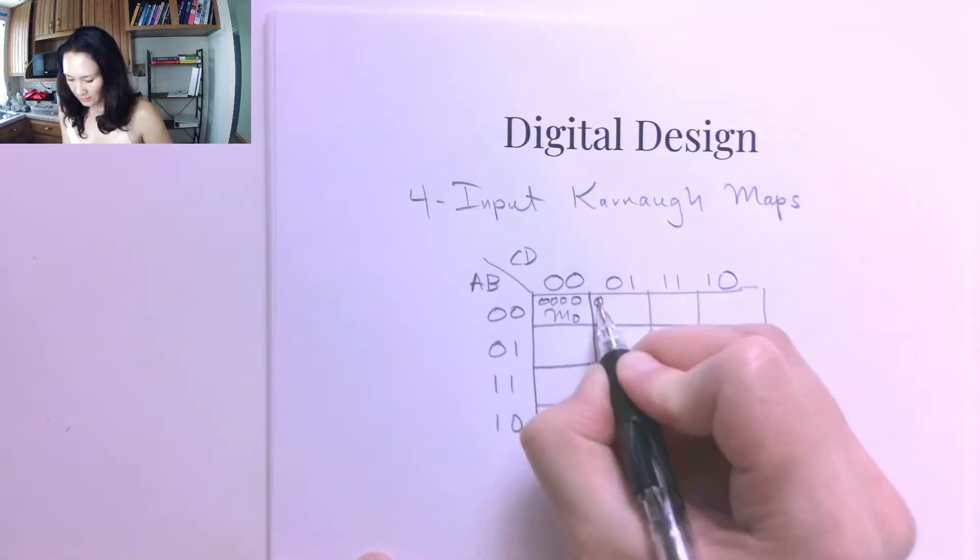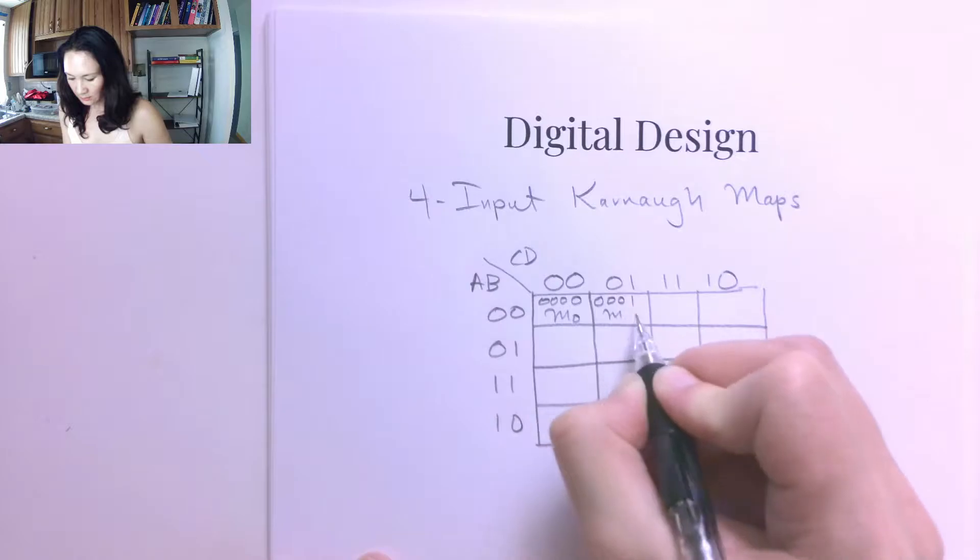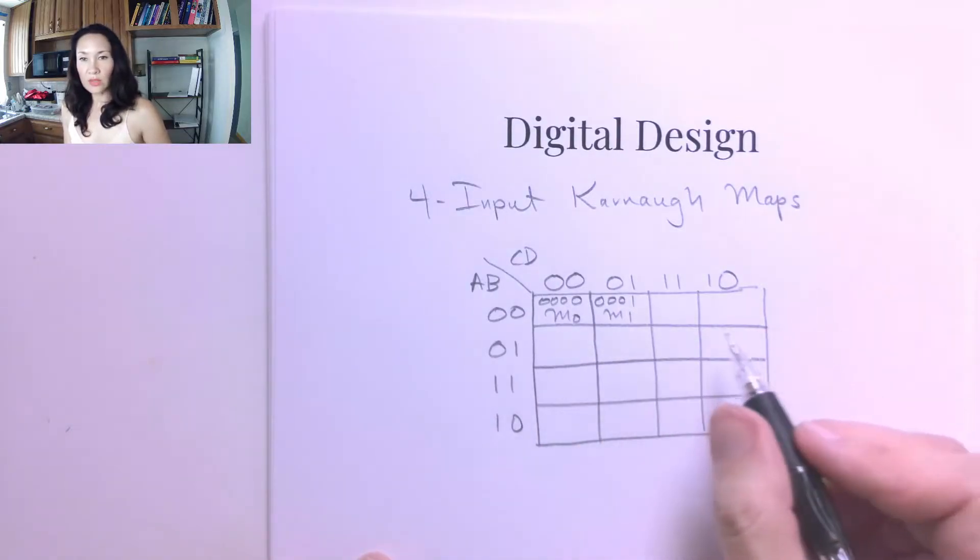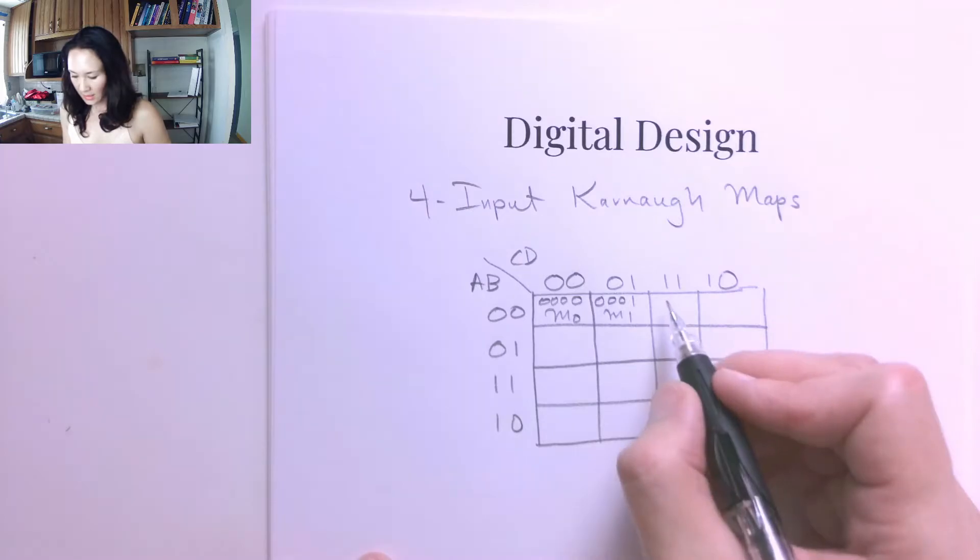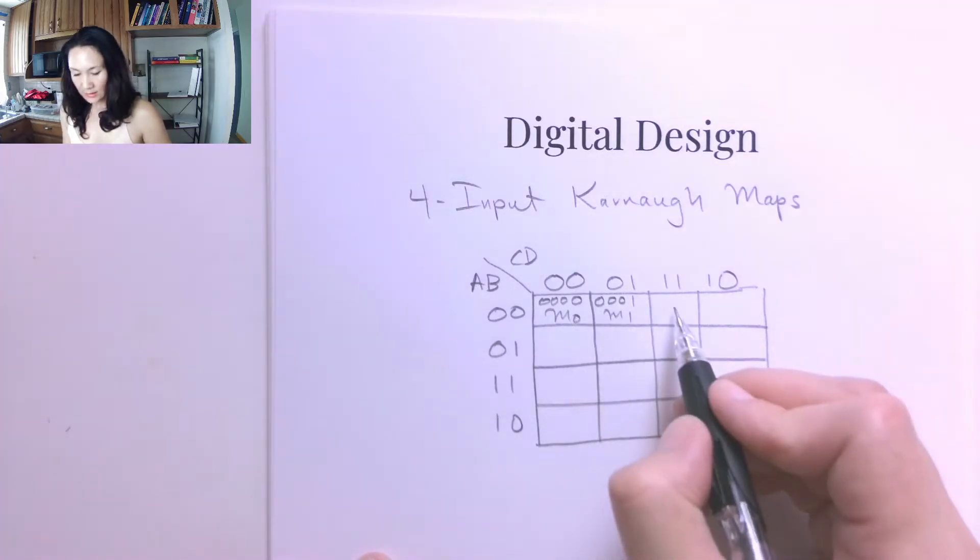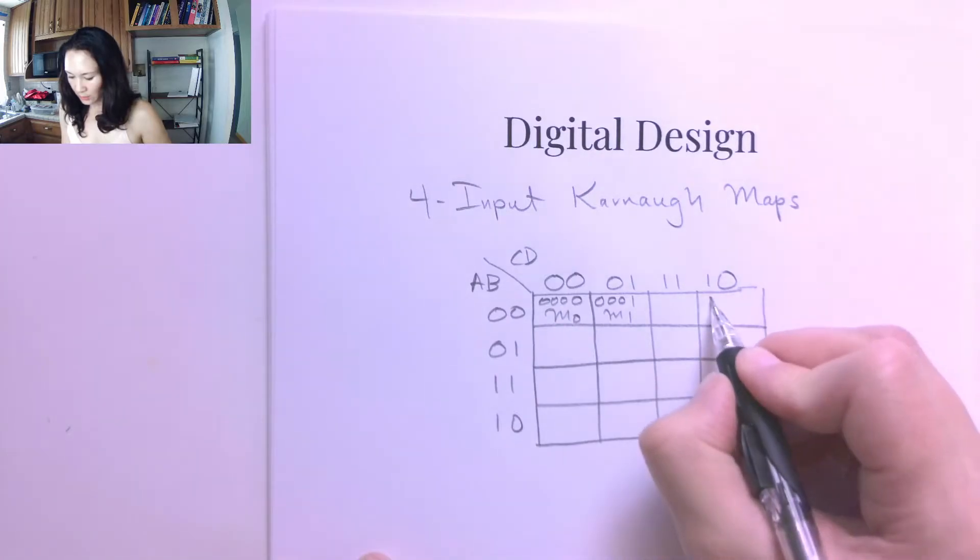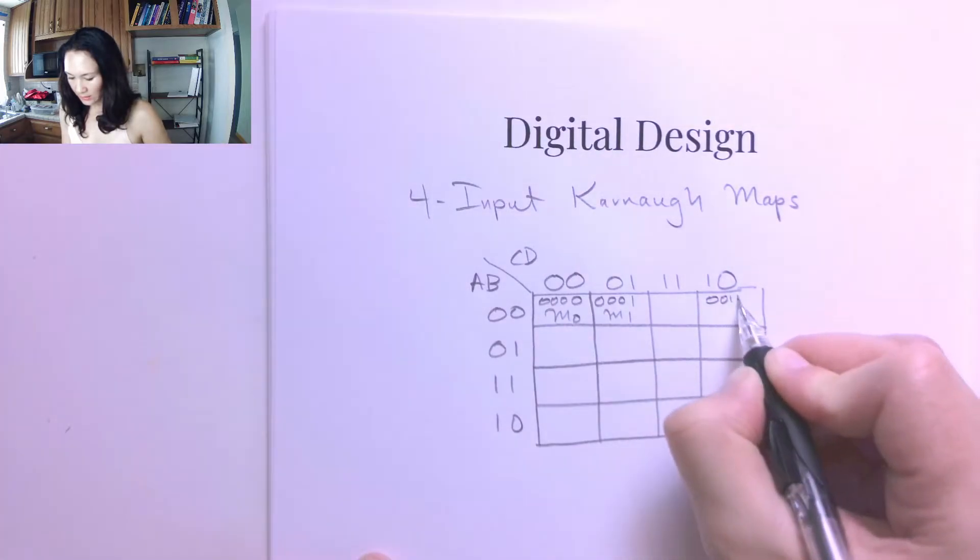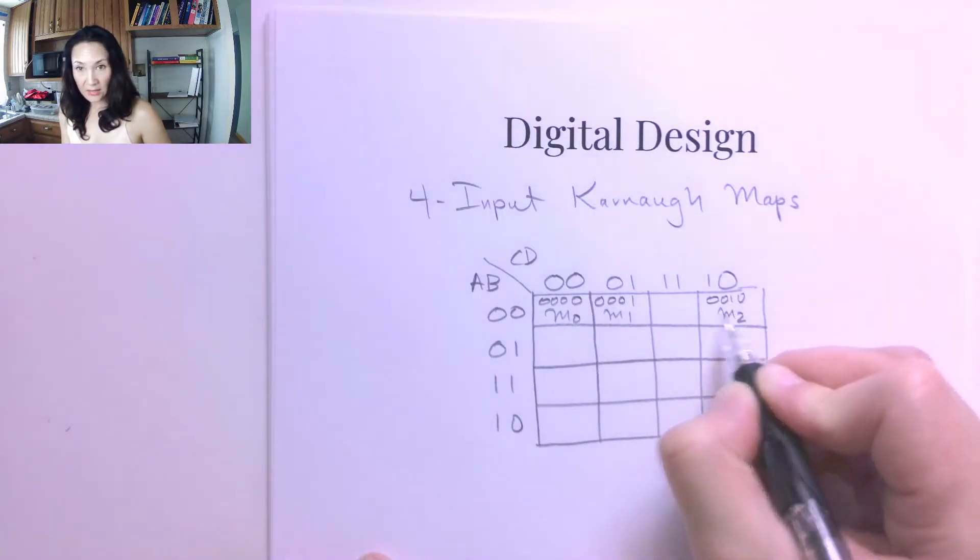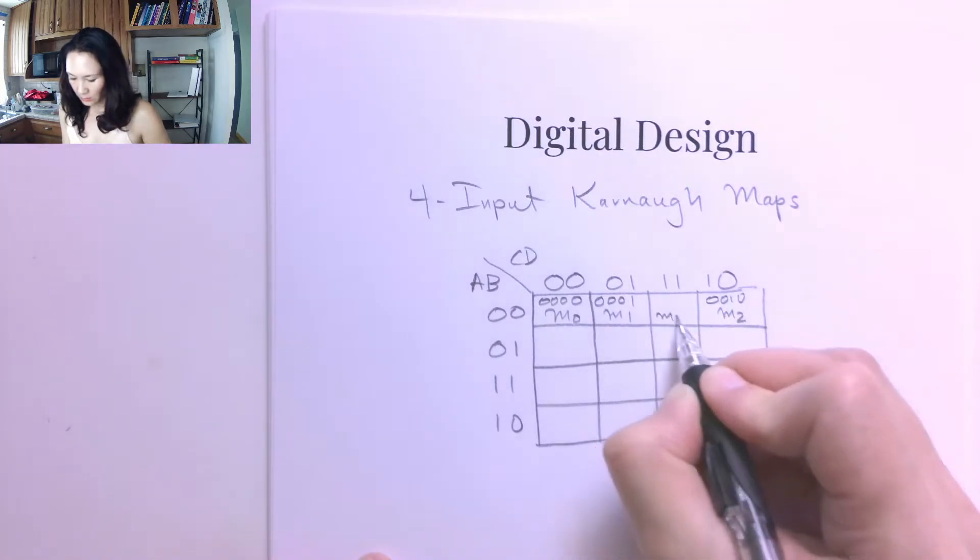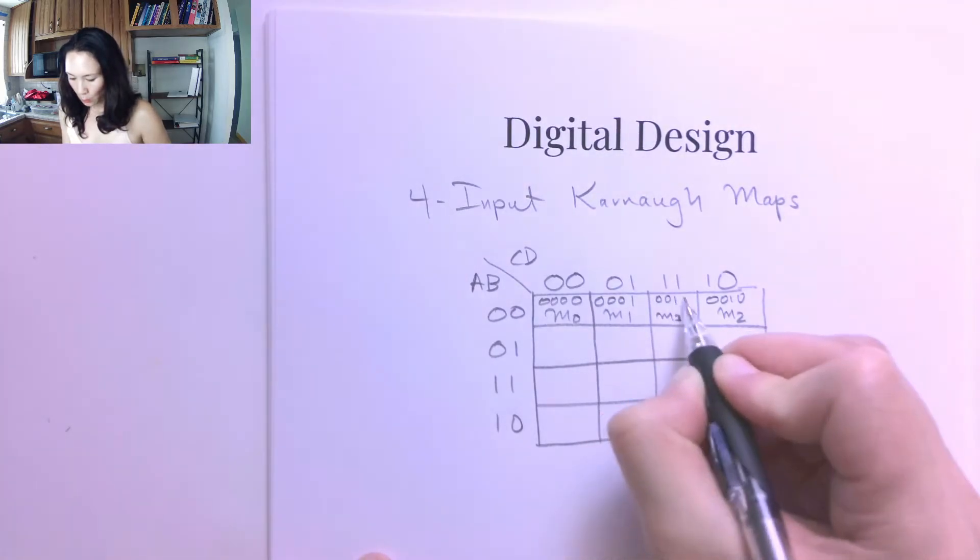Likewise, this is 0, 0, 0, 1, so this is min term 1. Now since we put this in gray code, this next case here, if this is 0, 1, this isn't 2, it's actually 3. So we have to skip over for min term 2. This is 0, 0, 1, 0 is min term 2, and then come back for min term 3, 0, 0, 1, 1.